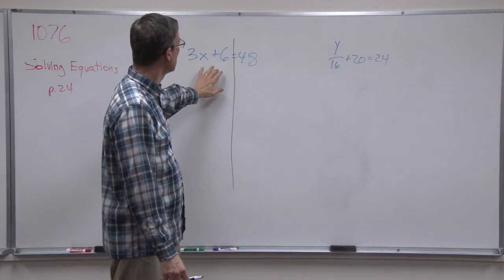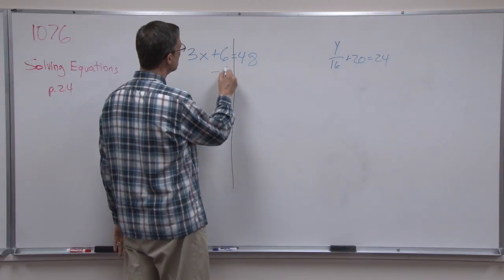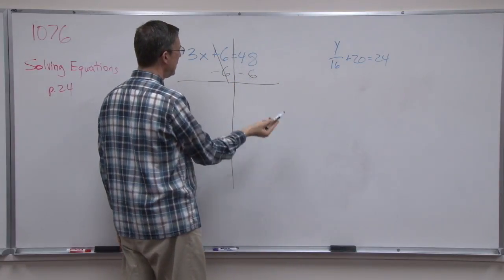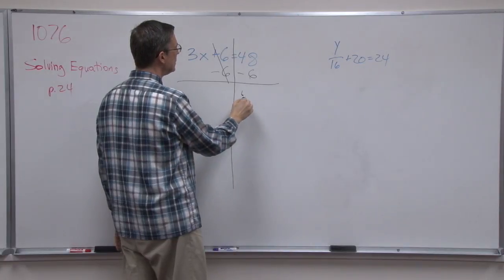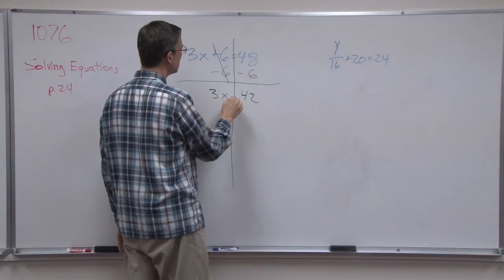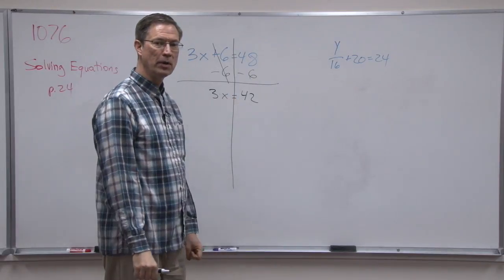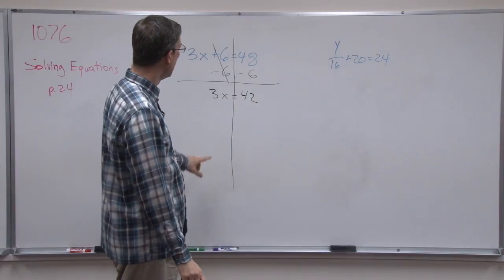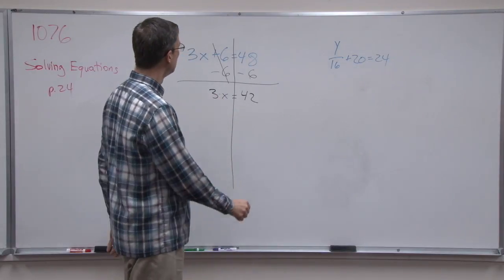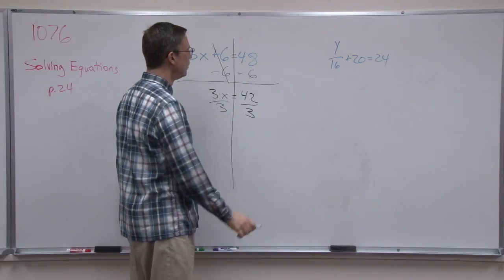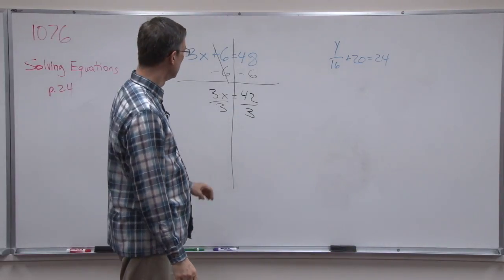So I'm going to subtract 6 because subtracting 6 will cancel that out. And that's what I wanted. This gives me 42, and then over here I have 3 times x. Keep the equals right on the line. So now to solve this, I'm going to undo multiplication. So I'm going to divide by 3 and do that on both sides of the equation, okay?